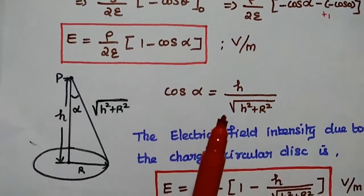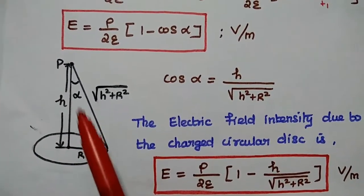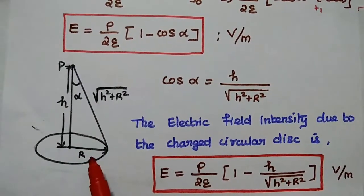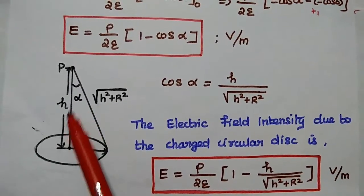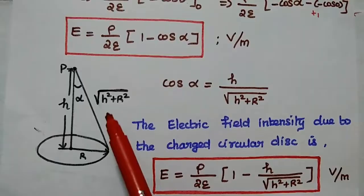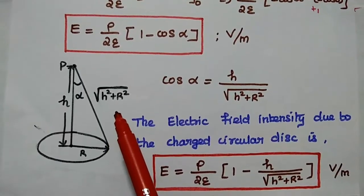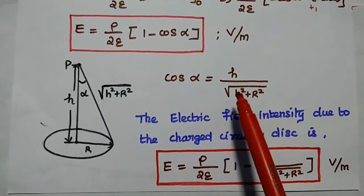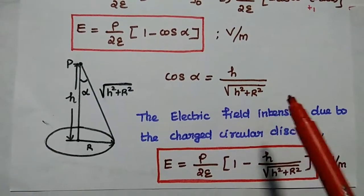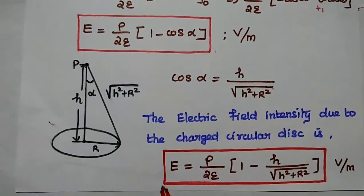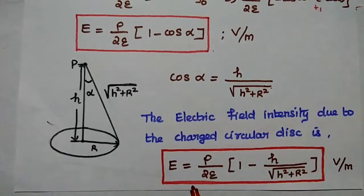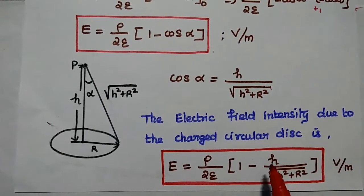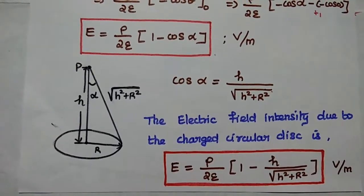This can be further simplified using the diagram values: radius capital R, angle alpha, and distance h. By the Pythagorean theorem, the hypotenuse is the square root of h squared plus R squared. Therefore, cos alpha equals h divided by the square root of h squared plus R squared. Substituting into the formula, the electric field intensity due to the charged circular disk is E = rho s / (2·epsilon) · (1 minus h divided by the square root of h squared plus R squared).